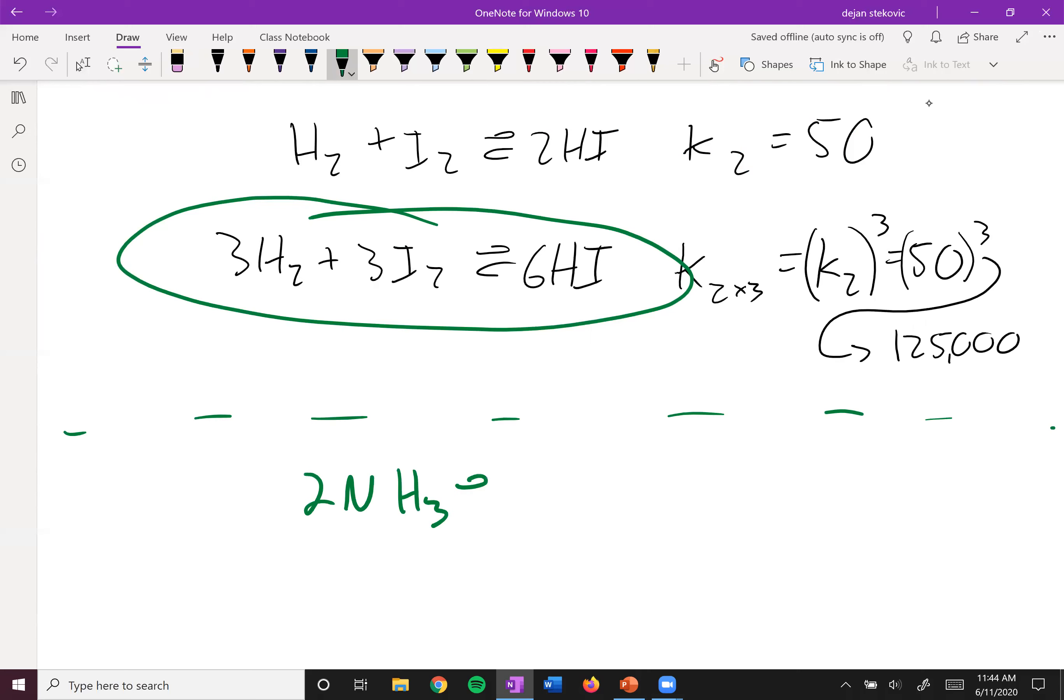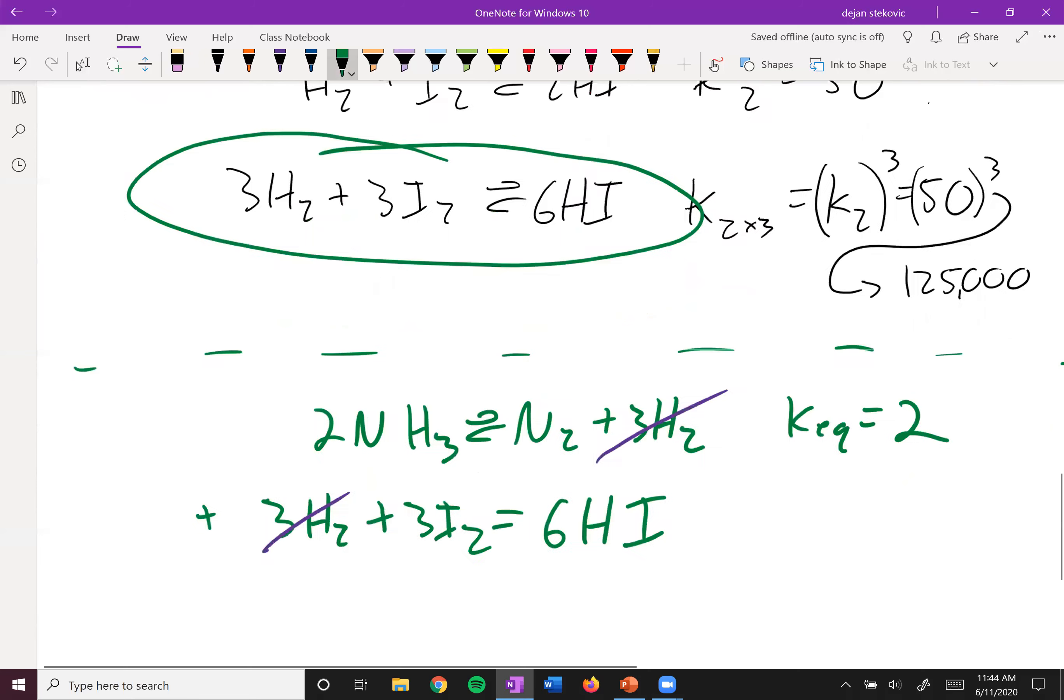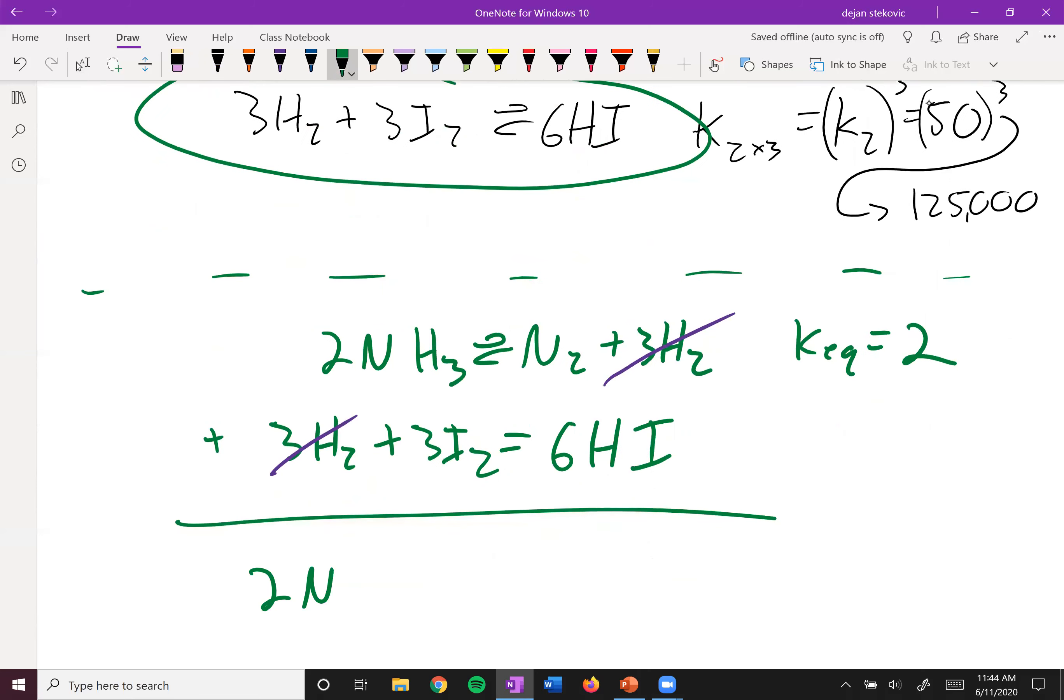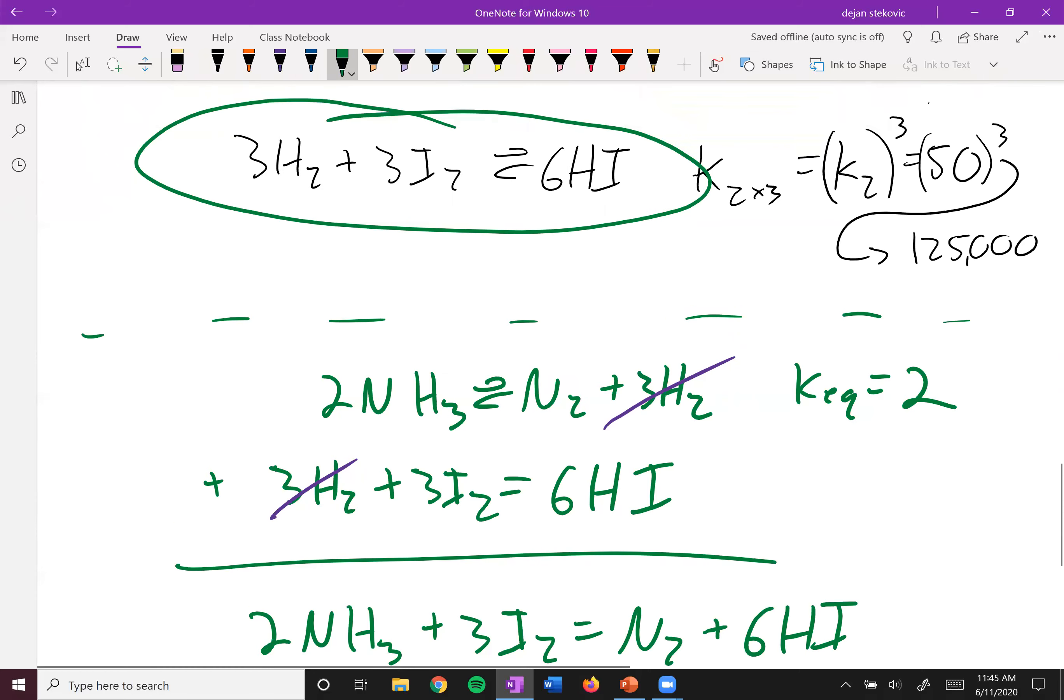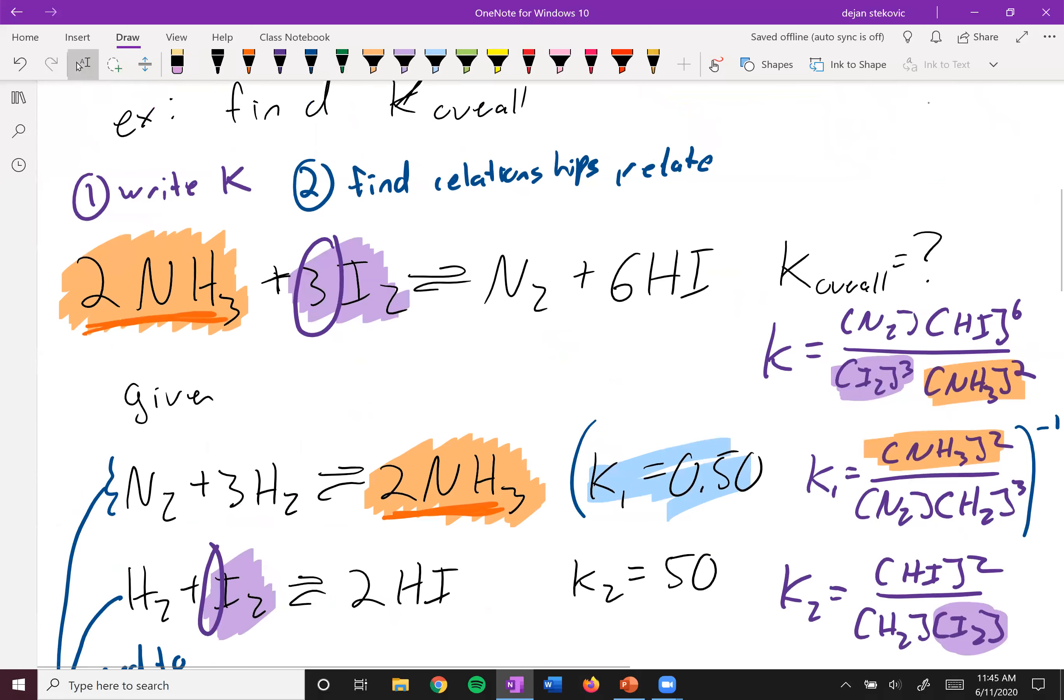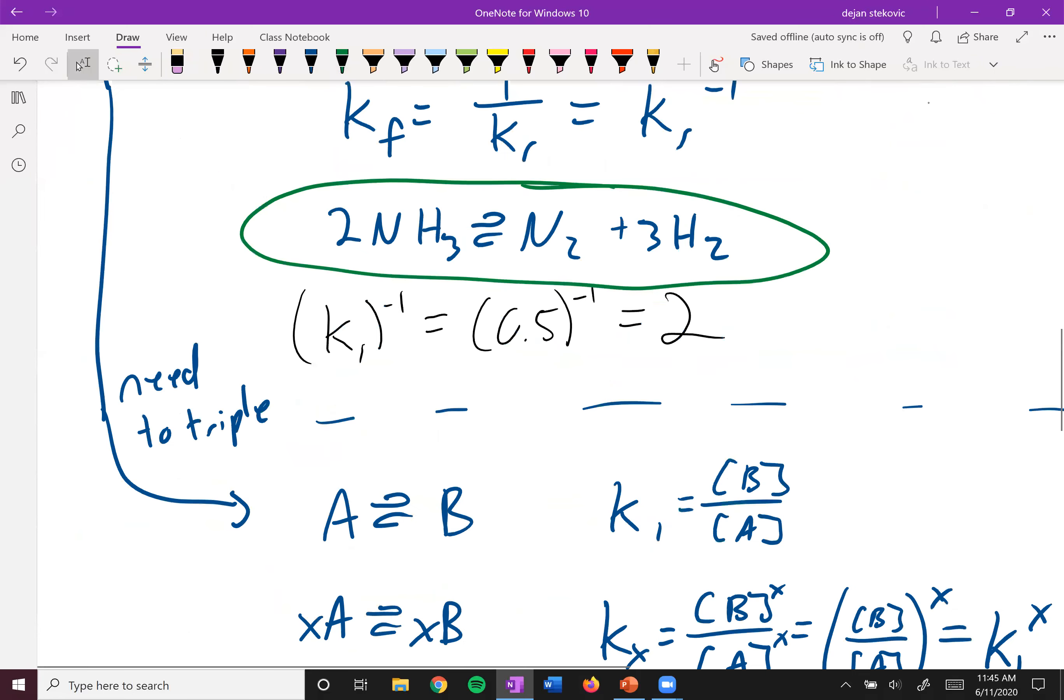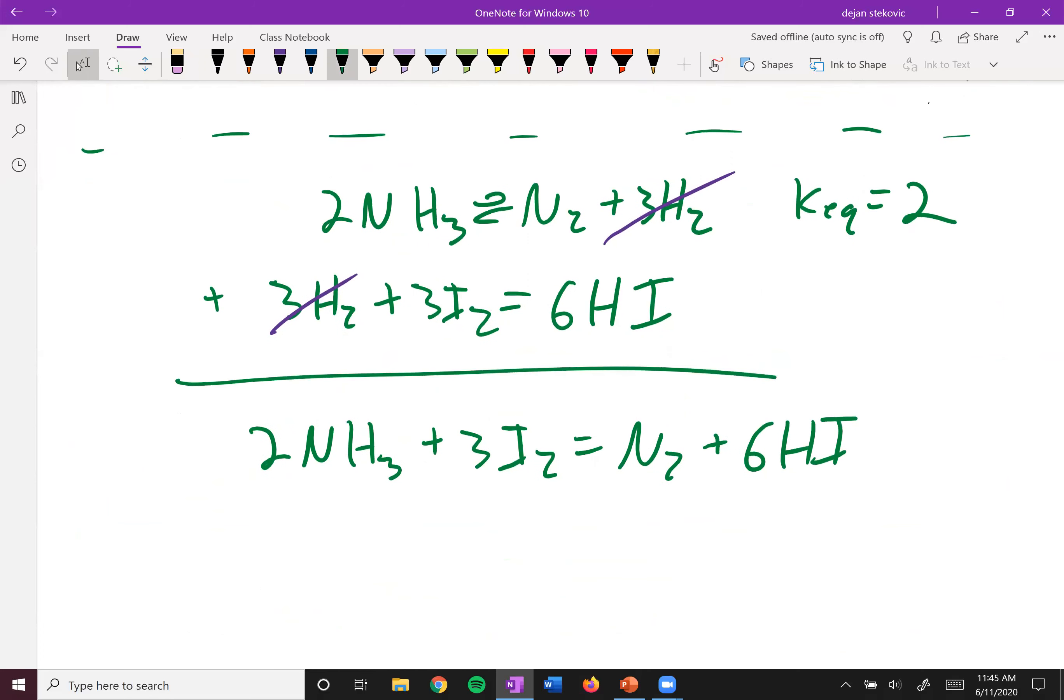So let's check it out. So the first equation was 2NH3 with N2 plus 3H2, and we said this KEQ is equal to 2. And then we had 3H2 plus 3I2 is equal to 6HI. And then remember things that show up on both sides of the equation, we can cancel them out. And then we sum this up. We get 2NH3 plus 3I2 goes to N2 plus 6HI. And if we take a look at our original equation, we have 2NH3 plus 3I2 goes to N2 and 6HI. That's exactly the same here. So this is exactly what we wanted.